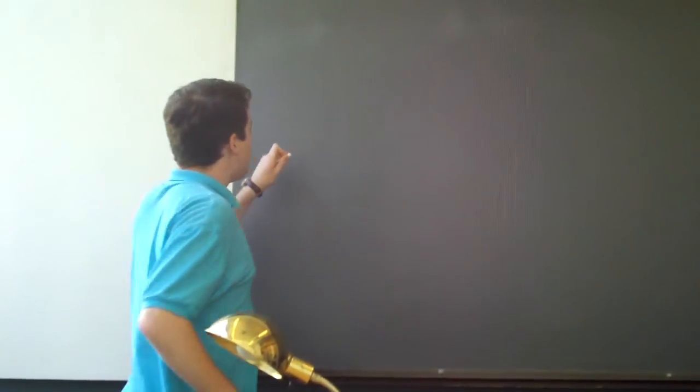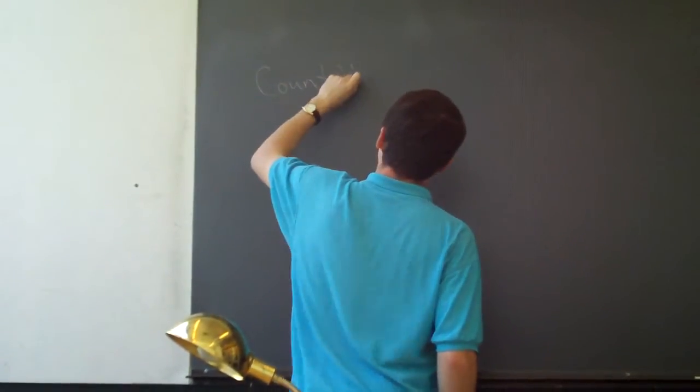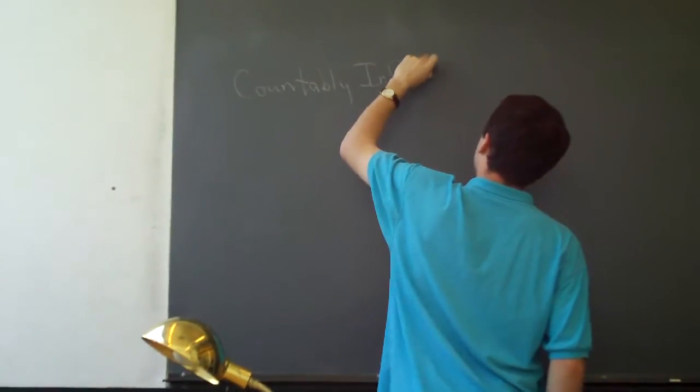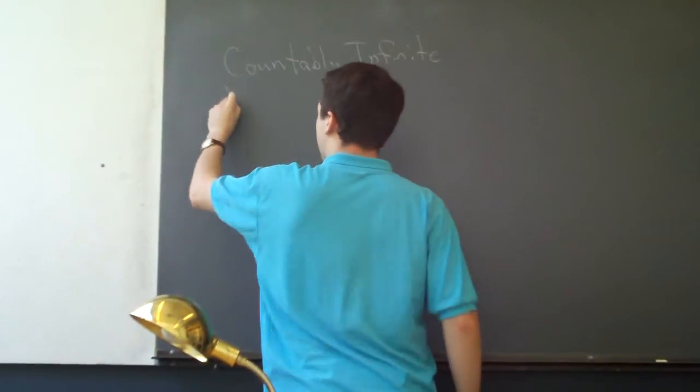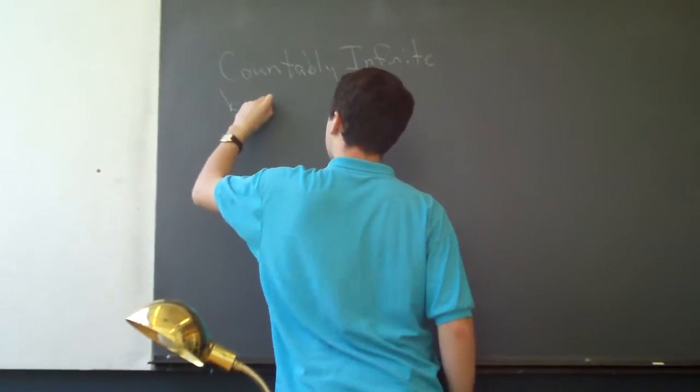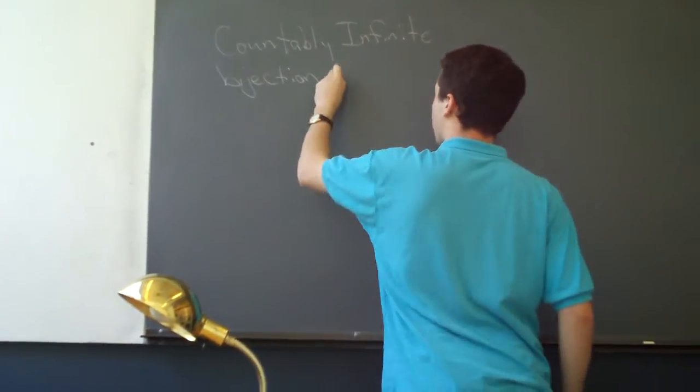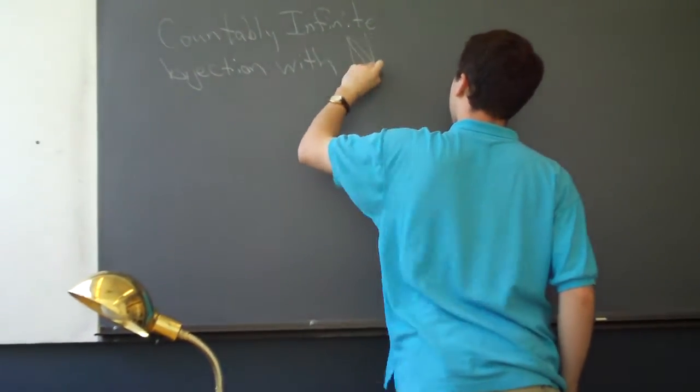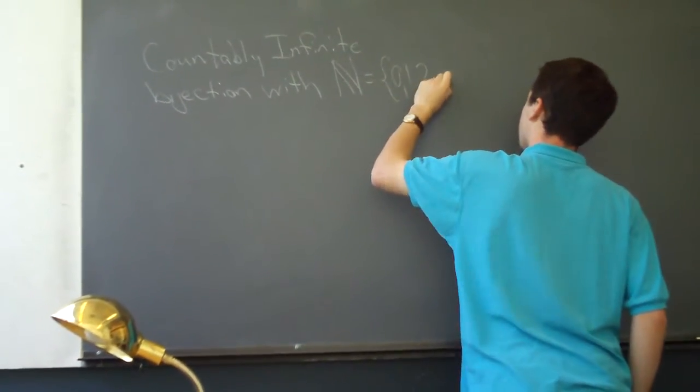Part 1 is to define countably infinite. Countably infinite simply means that there exists a bijection from the set with the set of the natural numbers 0, 1, 2, etc.